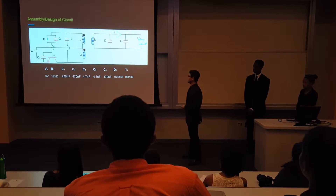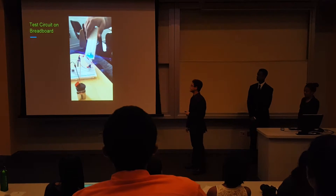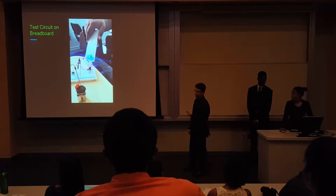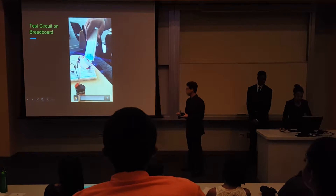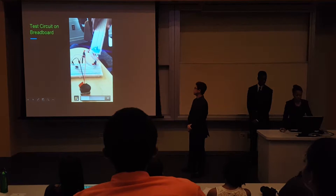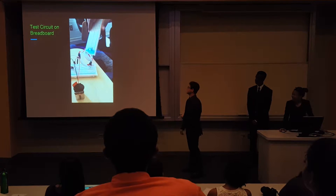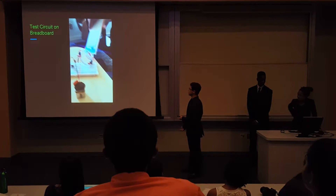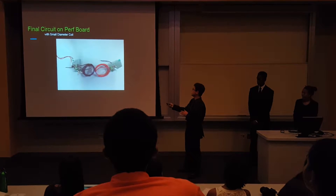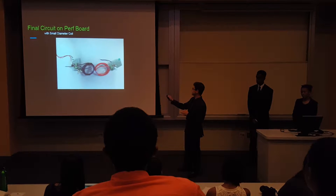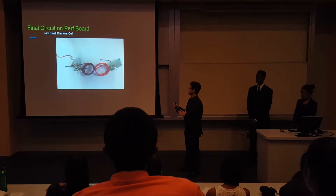Here are the component values used in our circuit and the part numbers for the diode and transistor. We initially tested our design on a breadboard to confirm it worked, and then moved it to a more stable perf board connection. Here we can see the final circuit used for experimentation, shown with the small diameter coils — one of four sets of coils we used.